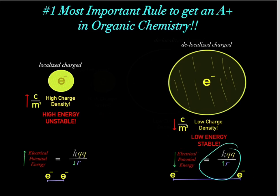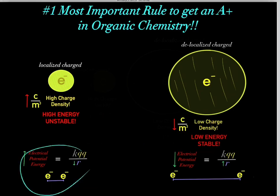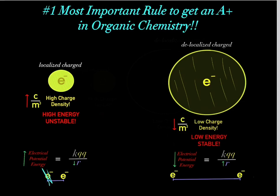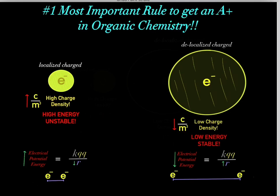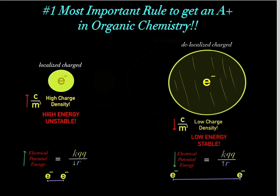So that's what this equation tells us — this is physics, so don't worry about it too much. But the point is, the closer charges are to one another, we would have higher charge density, which is higher in energy, so that's unstable. That explains why high charge density is high in energy and unstable.